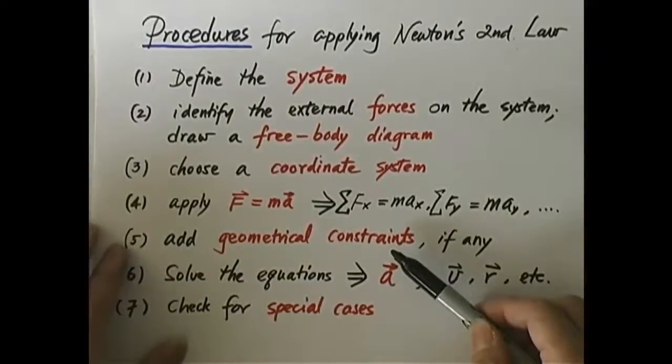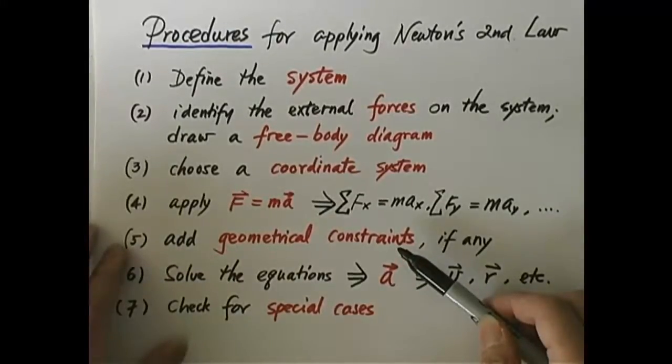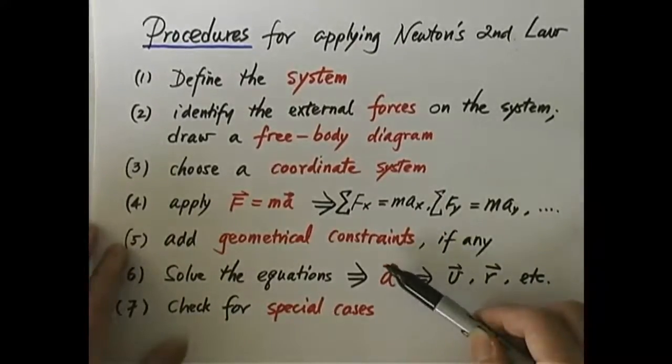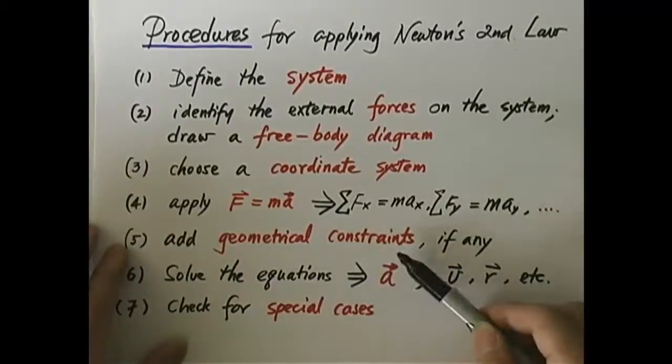Or if the object is restricted to move only in x direction, then y is a constant, z is a constant. That's another example of geometrical constraint. So please add geometrical constraint, if any.